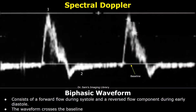This is another biphasic waveform. We see a large forward flow component and we also see a reverse flow component, so two components are present, therefore it is a biphasic waveform, and this waveform has crossed the baseline.